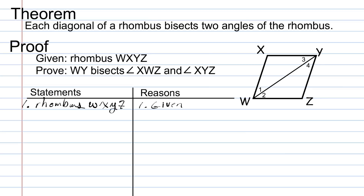Now, to prove that angle 1 is congruent to angle 2 and angle 3 is congruent to angle 4, we're going to prove that triangle W-X-Y on the top and triangle W-Z-Y on the bottom are congruent. Then angle 1 is congruent to angle 2 and angle 3 is congruent to angle 4 by corresponding parts of congruent triangles are congruent.